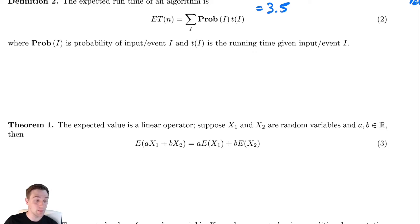The idea is that if you're adding up two different expected values and maybe even multiplying them by constants. So this left-hand side, we have the expected value of aX1 plus bX2. You can distribute the expected value over the summation, and factor those constants out. So we can get a times the expected value of X1 and b times the expected value of X2.